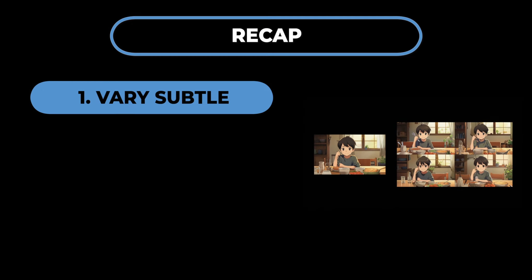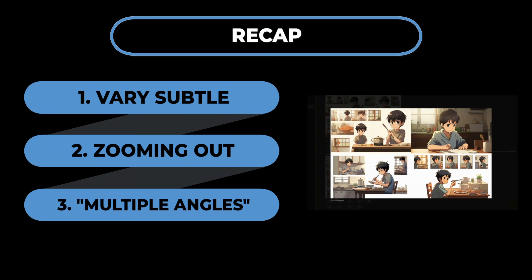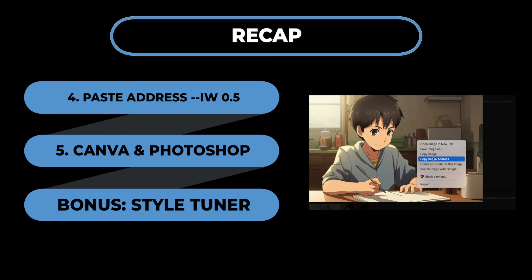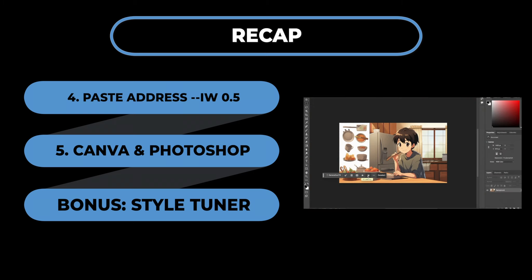Before we get into training a dataset, let's recap how we're getting good training data in the first place. One: using 'very subtle.' Two: zooming out and getting close-ups and long shots of the same characters and settings. Three: asking for a prompt with multiple angles or a character sheet and erasing down to one character at a time. Four: copying and pasting the image addresses into new prompts with a low image weight that just replicates the style. And five: using Canva and Photoshop to touch up our images.